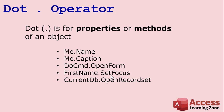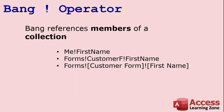Properties of controls: FirstName is a control — a text box. dot SetFocus is a method (do something), while FirstName.Width is a property. CurrentDb.OpenRecordset is also doing something — an action. So dot is for actions or properties. The bang operator, on the other hand, is used to reference a member of a collection.